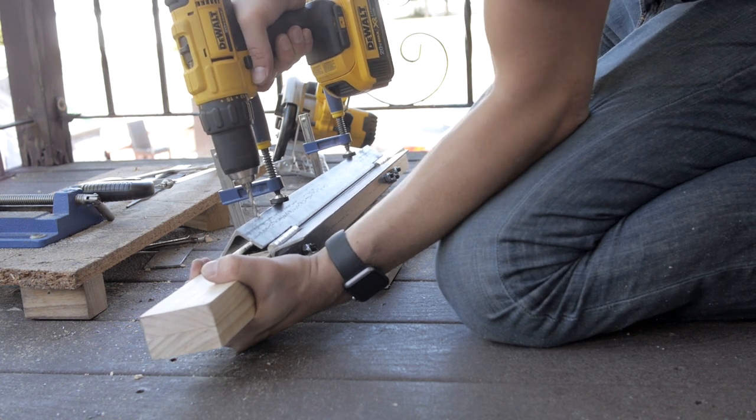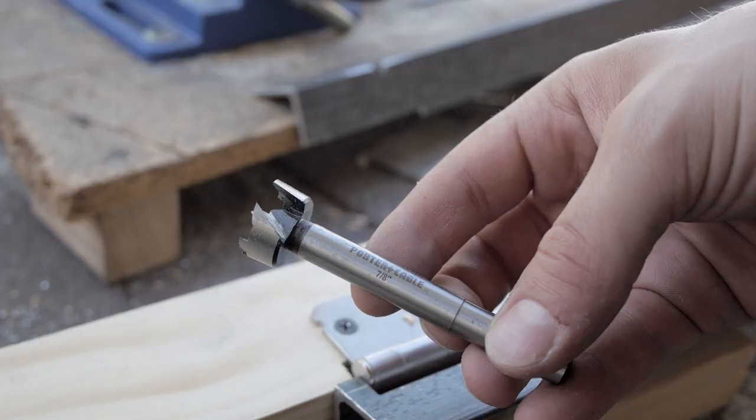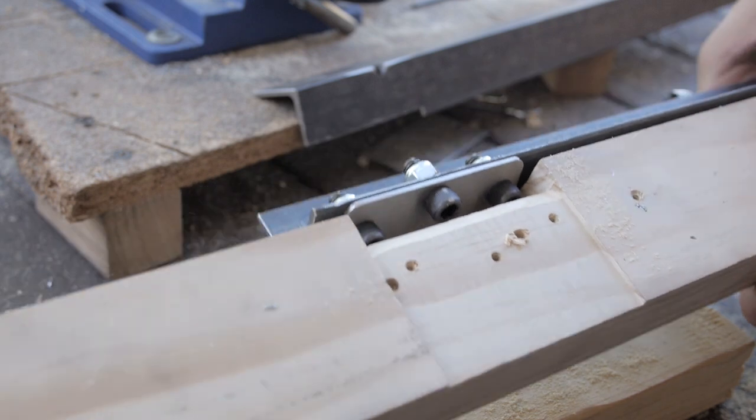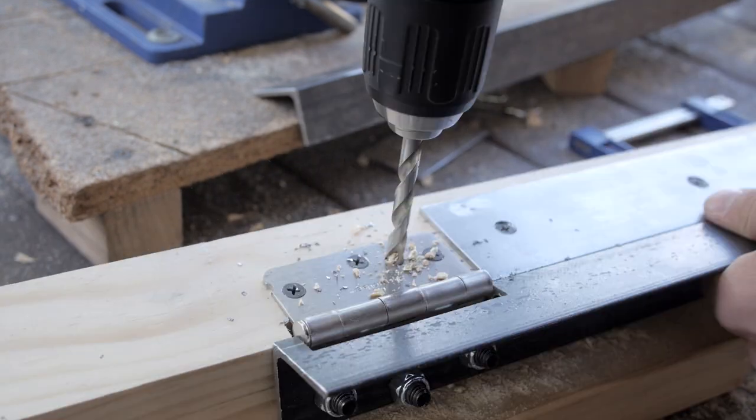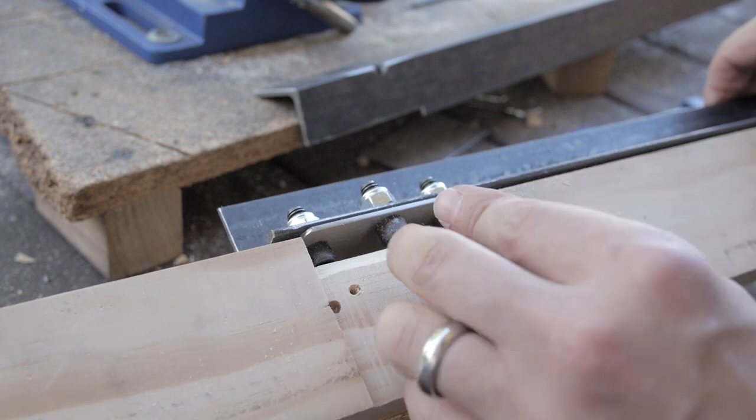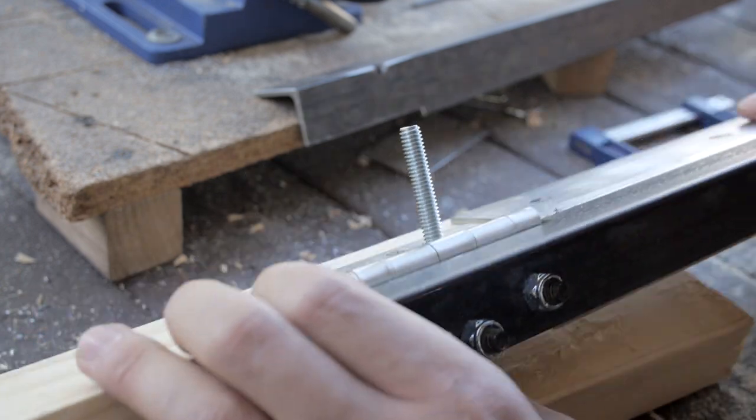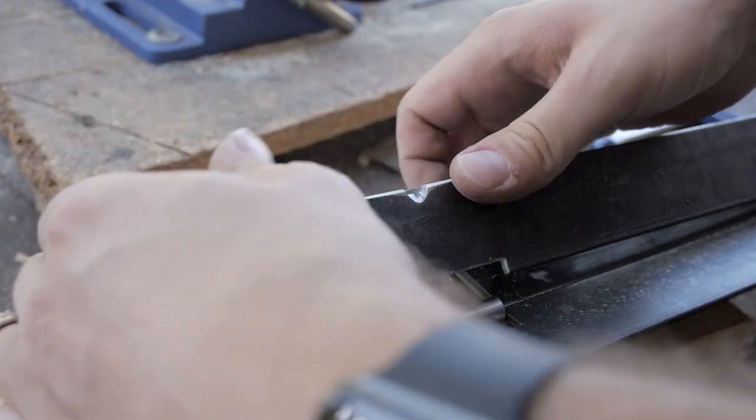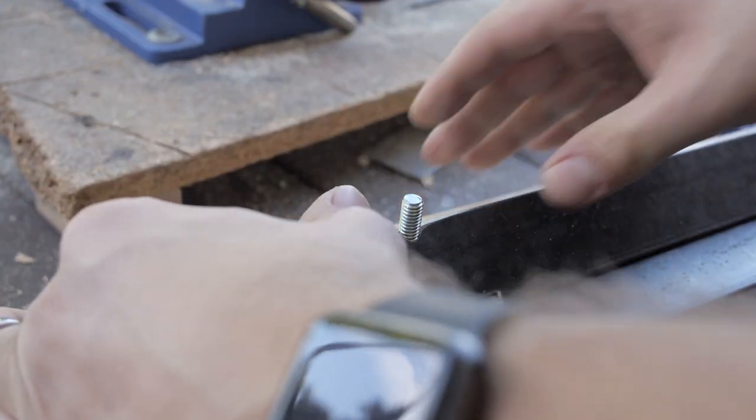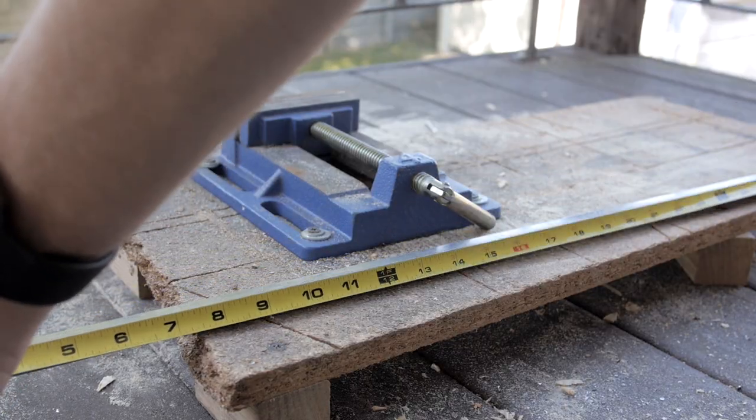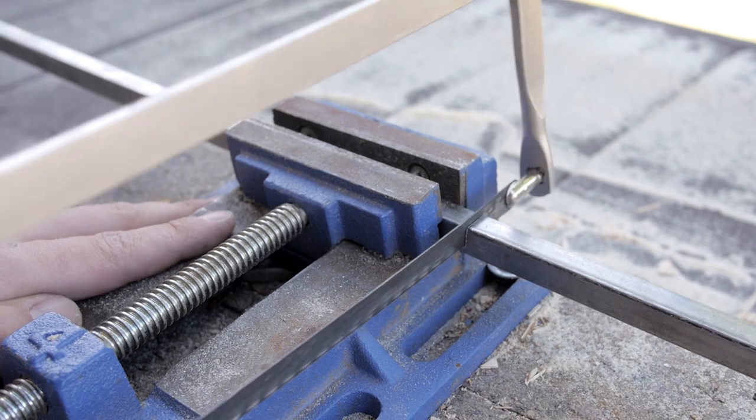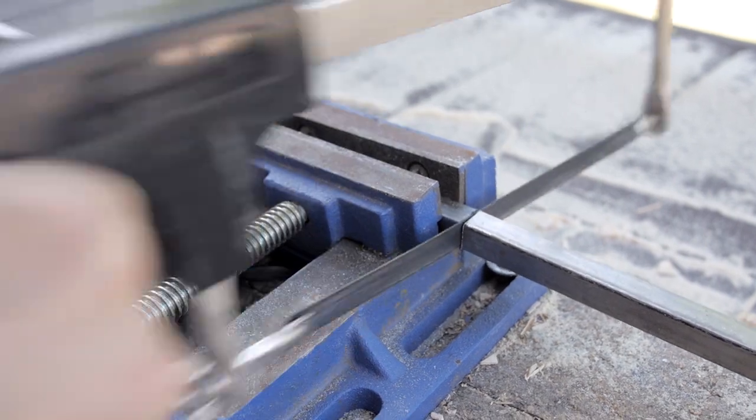Holes for the carriage bolts were drilled through the hinges and through the block of wood. Some nuts were used to tighten the carriage bolt into the wood. I cut the box tube in half to create the two handles.